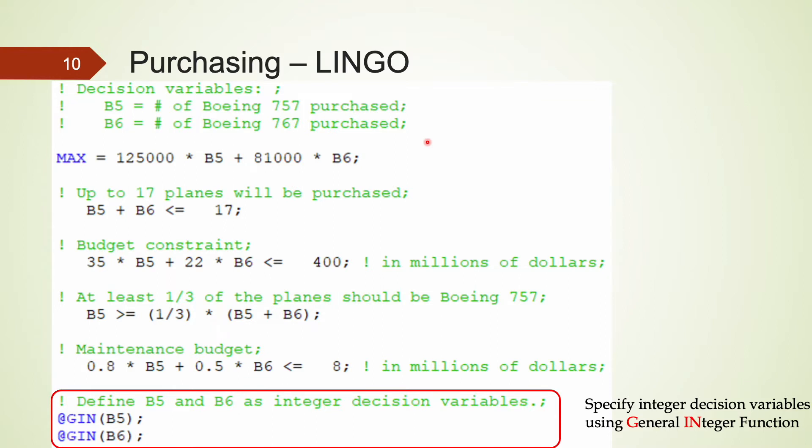It is actually very simple to do that. In LINGO, all we need to do is to use the keyword GIN to define these integer-valued decision variables. GIN stands for General Integers. Make sure that you start the GIN keyword using at sign, and you have to define one variable at a time and treat these lines as additional constraints.